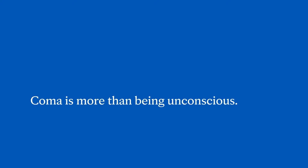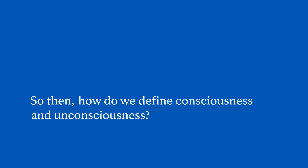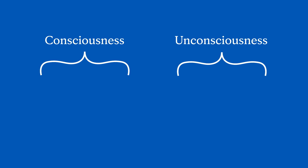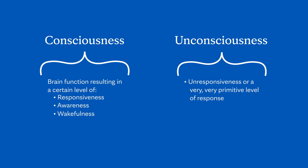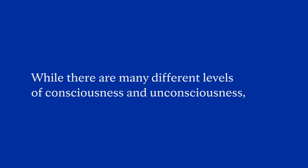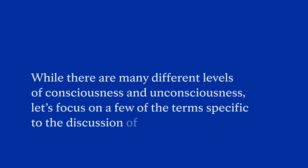Coma is more than being unconscious. So how do we define consciousness and unconsciousness? They act as umbrella terms for different levels of brain activity and awareness. Consciousness means brain function that results in a certain level of responsiveness, awareness, and wakefulness. Unconsciousness, meanwhile, is the opposite — unresponsiveness or a very primitive level of response, being unaware of one's surroundings, or not being awake. While there are many different levels of consciousness and unconsciousness, let's focus on a few of the terms specific to the discussion of coma.